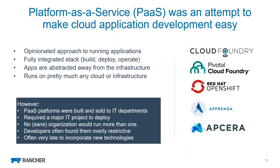Companies like Pivotal and Red Hat's OpenShift were the leading PaaS products in the early days. Companies like Apprenda and Apsera also built implementations — always positioned as opinionated approaches to running applications, where they integrated the stack, abstracted away the concept of the application from the infrastructure, and were built to be portable. This was wildly successful in terms of attention, but a lot less successful when it came to actually implementing and driving adoption.